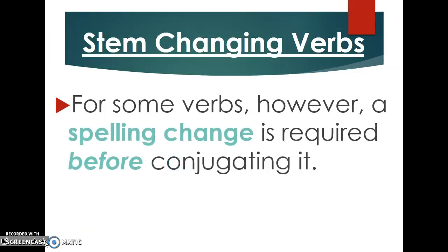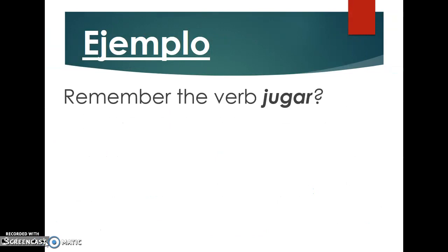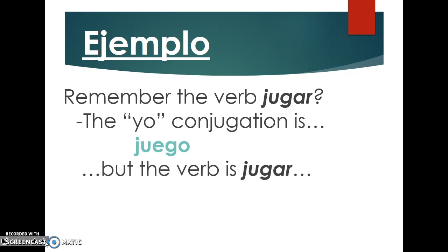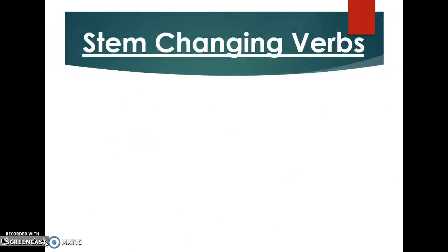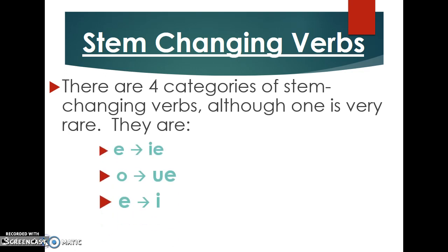So, stem changing verbs. Just as a quick review, stem changing verbs mean that they require a spelling change before the verb is fully conjugated. The change is in the stem, not in the ending, hence the name stem changing verbs. There are four categories: E to IE, O to UE, E to I, and U to UE. The U to UE category is very rare — the verb 'jugar' is probably the most common one you'll see.